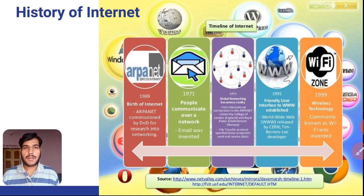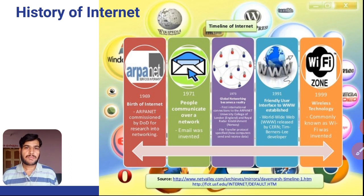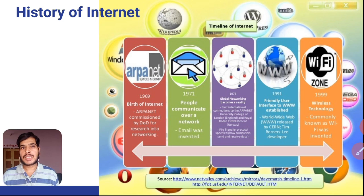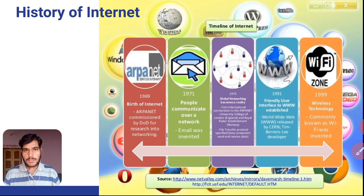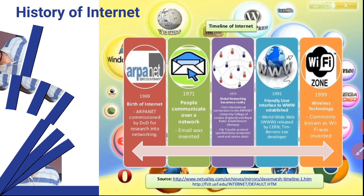In 1991, a friendly user interface to WWW was established. WWW is nothing but the World Wide Web, which was released by CERN, and Tim Berners-Lee was the developer. And in 1999, people started using wireless technologies like Wi-Fi, Bluetooth, infrared, and satellite-based communication. This is how the Internet has been developed from 1969 to today.